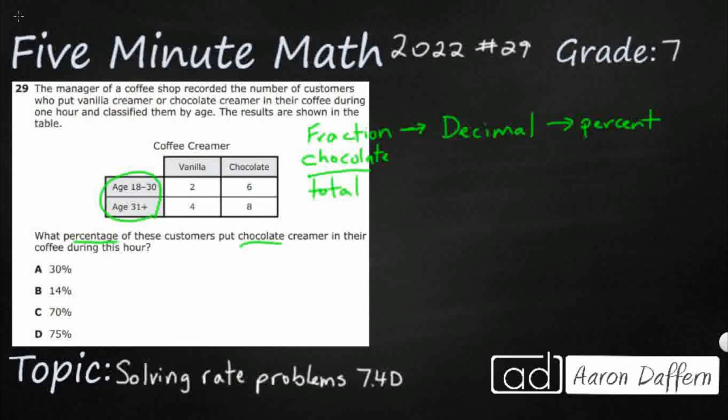So there were six vanilla, and there were 14 chocolate. And I really think that age thing was just kind of extra information we probably don't need. So how many chocolates do we have? We've got 14 chocolates. How many total? Well, 14 plus 6 is going to make 20.